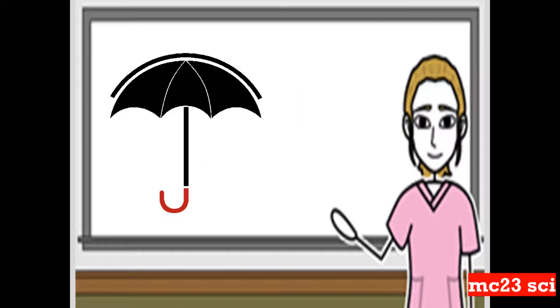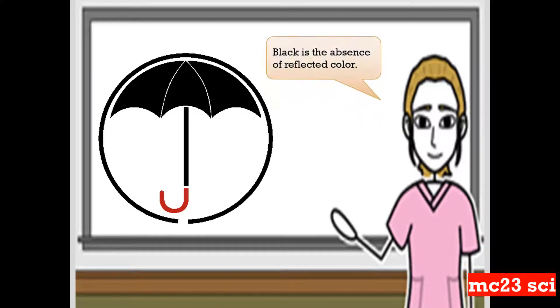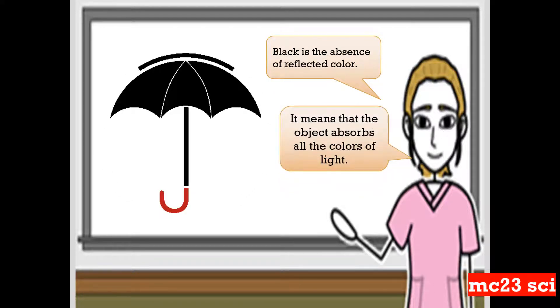Take a look at the picture. Black is the absence of reflected color. It means that the object absorbs all the colors of light.